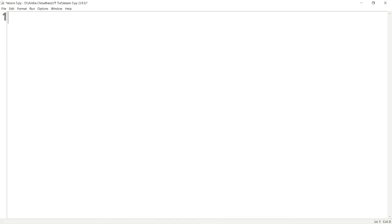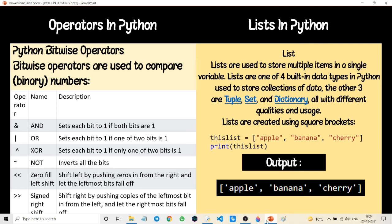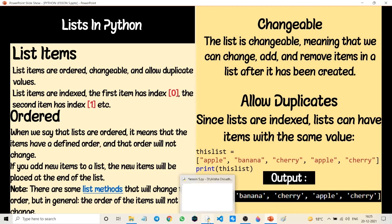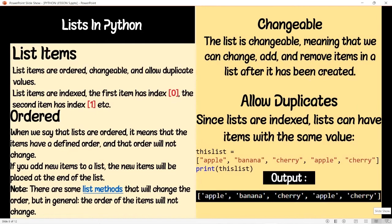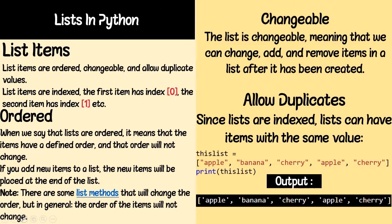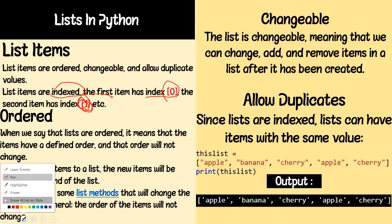I'll copy this list for the next topics related to lists. List items are ordered, changeable, and allow duplicate values. List items are indexed — the first item has index zero, the second item has index one, and so on. Here in the list, apple is at the first place, but we call it index zero because in Python indexing starts at zero, not one.